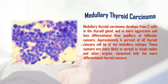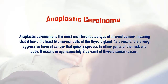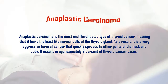Anaplastic carcinoma is the most undifferentiated type of thyroid cancer, meaning that it looks the least like normal cells of the thyroid gland. As a result, it is a very aggressive form of cancer that quickly spreads to other parts of the neck and body. It occurs in approximately 2% of thyroid cancer cases.